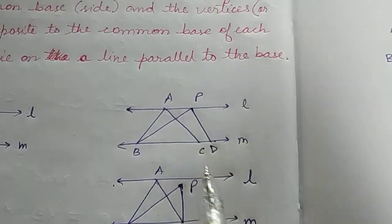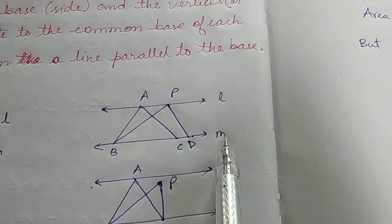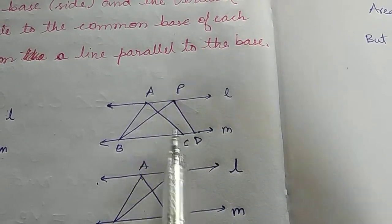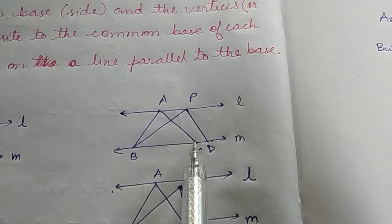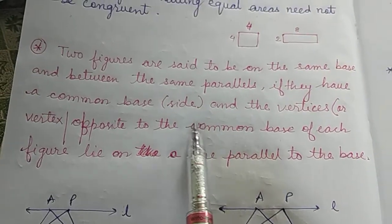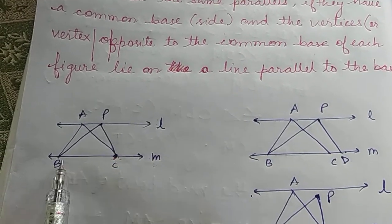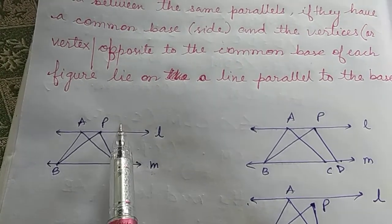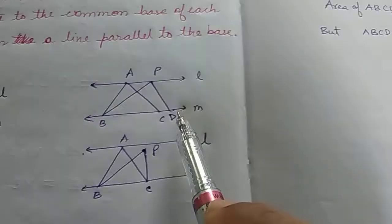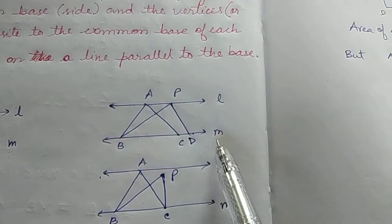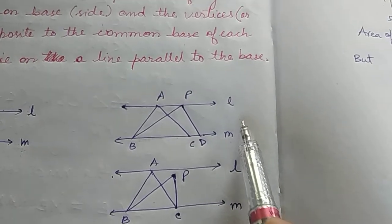However, looking at triangle ABC and triangle PBD — they are between the same parallels L and M, but the base of triangle ABC is BC, while the base of triangle PBD is BD. These bases are not the same, so this condition is not satisfied. Both bases should be on the same line and of equal length, and the vertices should lie on the line parallel to the base.